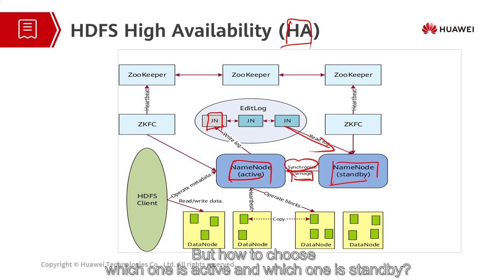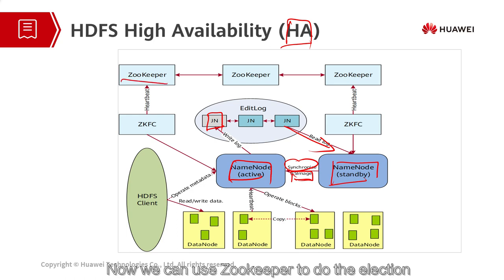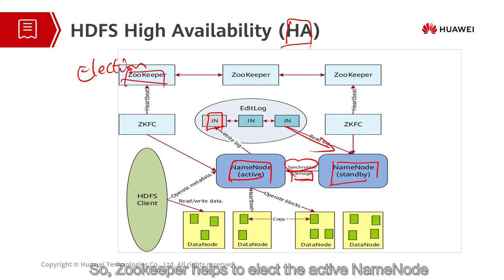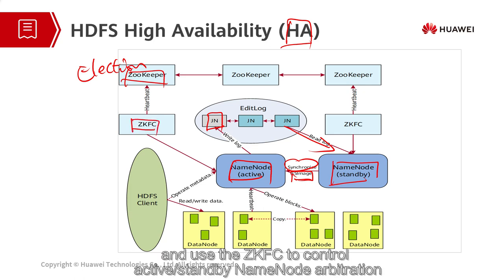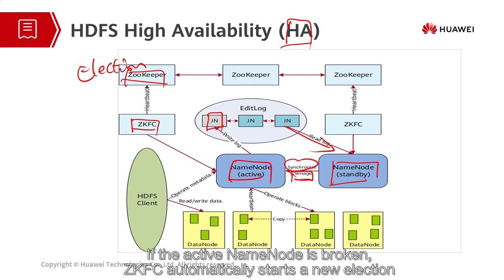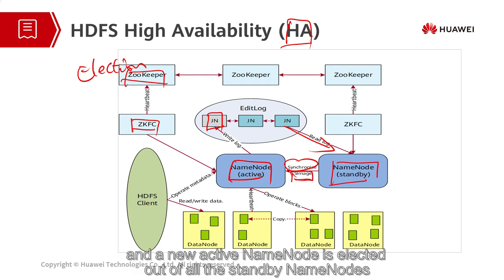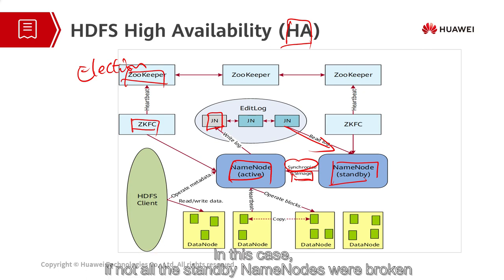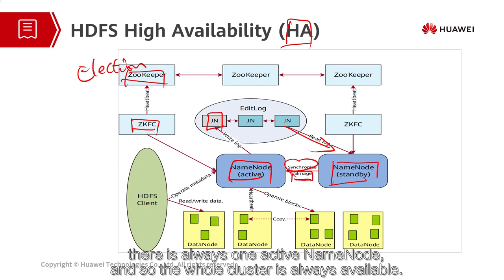But how to choose which one is active and which one is standby? We can use ZooKeeper to do the election. ZooKeeper helps to elect the active name node and uses the ZKFC to control active and standby name node arbitration. If the active name node is broken, ZKFC automatically starts a new election and a new active name node is elected out of all the standby name nodes. If not all the standby name nodes were broken, there is always one active name node, and so the whole cluster is always available.